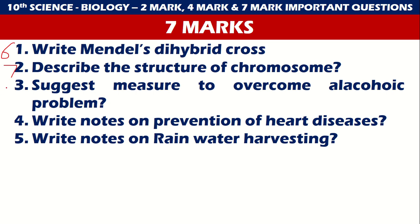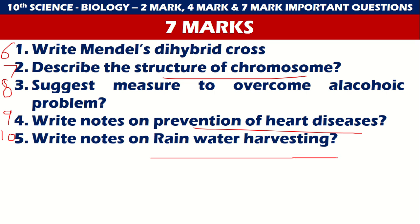Questions 6 to 10: Mendel's dihybrid cross. Structure of chromosomes. Suggest measures to overcome alcoholism. Write notes on prevention of heart diseases. Write notes on rainwater harvesting. Structure of chromosomes, prevention of heart diseases, and rainwater harvesting are treated to be very important.